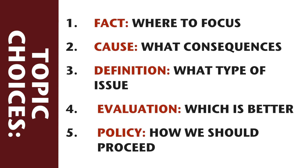With our topic of mask wearing and public health, you can see how thinking through the different types of claims can help you narrow down your topic into a good thesis statement. With fact claims, we decided to argue about where we should focus. With cause claims, we considered consequences. With definition claims, we talked about the type of issue we're addressing and who should handle the decisions. With evaluation, we weighed out two possibilities and picked the better one. And with policy, we considered how a policy should be enacted to meet certain requirements. This is only one way to think about these five claim types, but it has already opened up your one issue into a world of different possibilities.